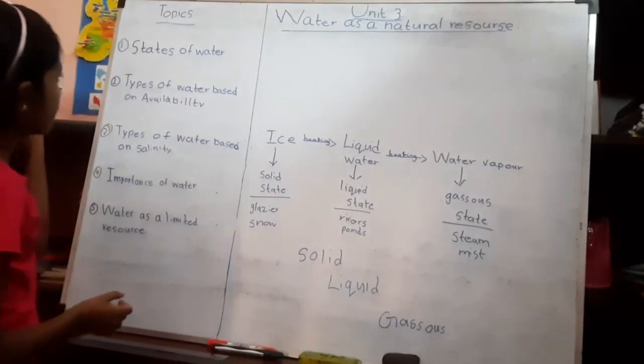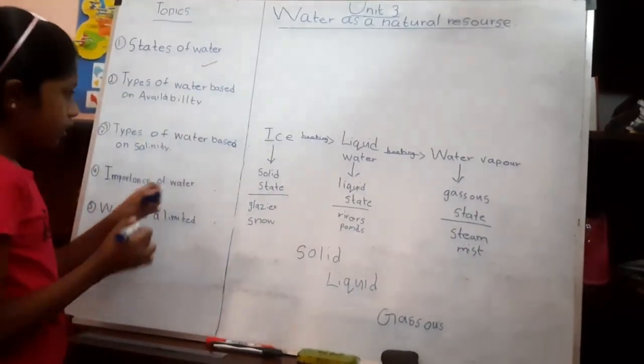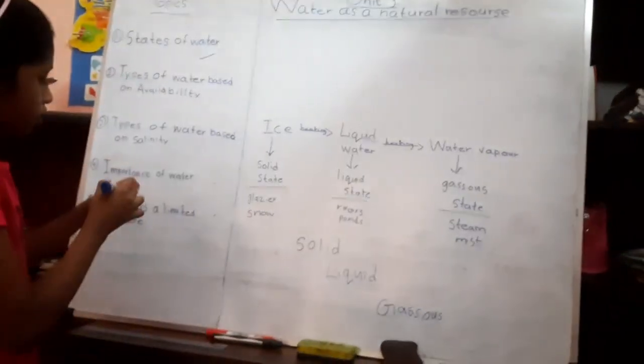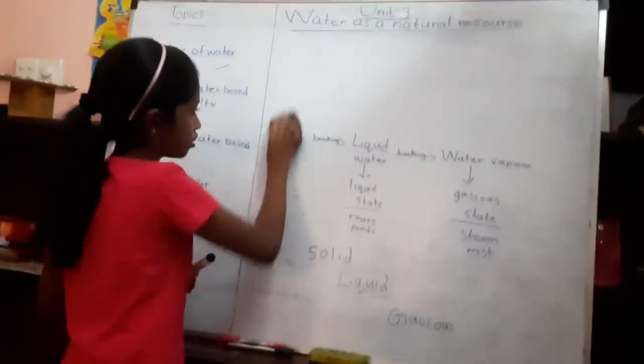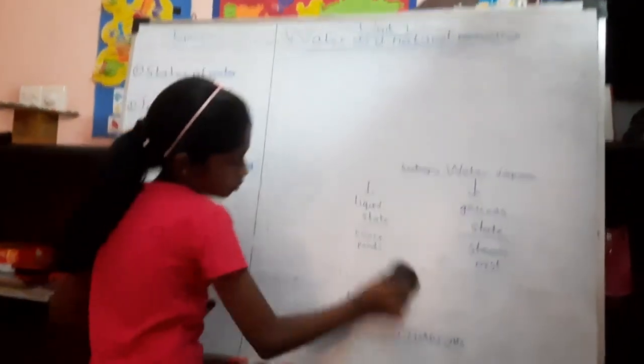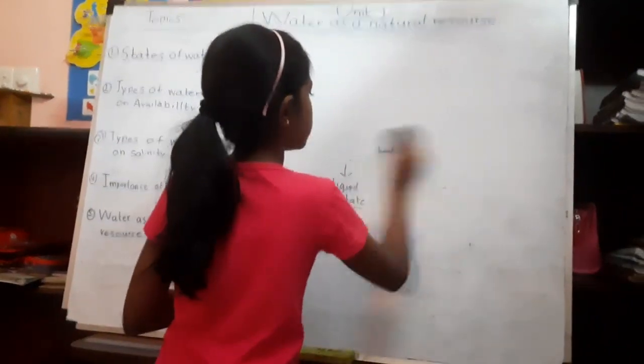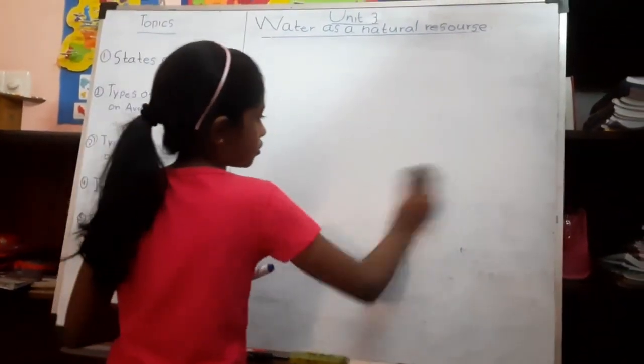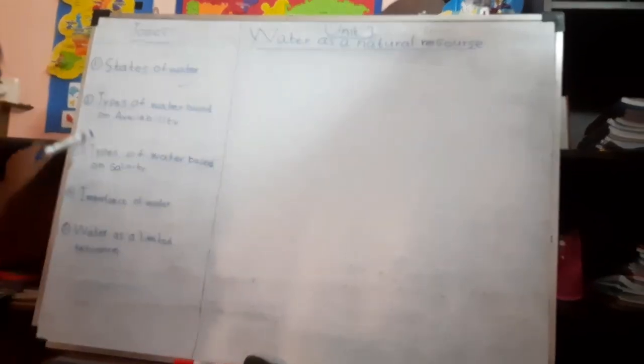So we discussed the first topic also. Now we will discuss the second topic. The second topic is types of water based on availability.